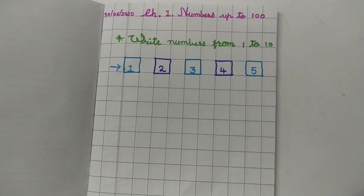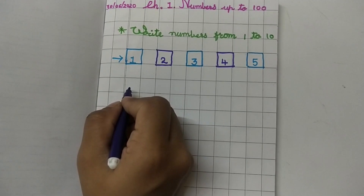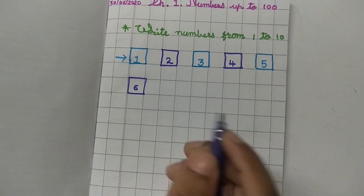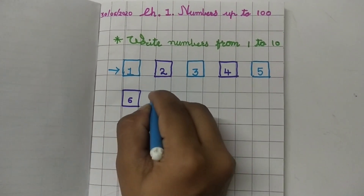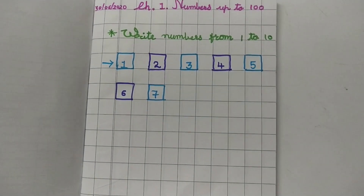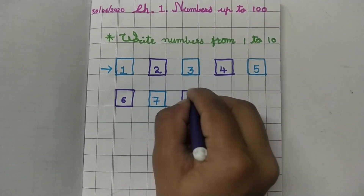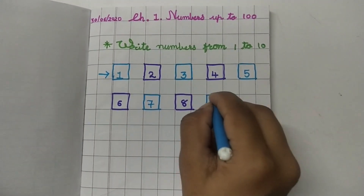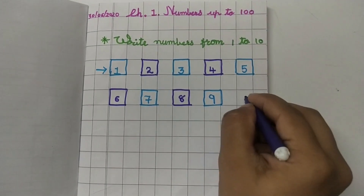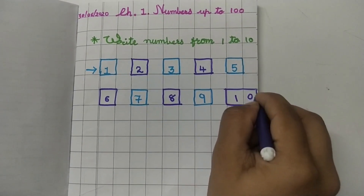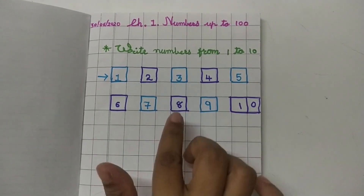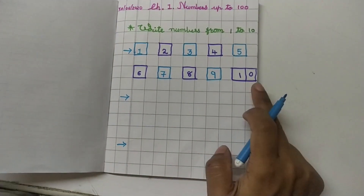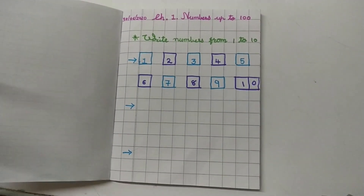Now again leave one line and then start writing. After 5 write 6 and make a box. After 6, write 7. After 7, write 8. After 8, write 9. Remember, you have to write with pencil only. After 9, write 10. You have to write this same way 2 more times, so total 3 times.